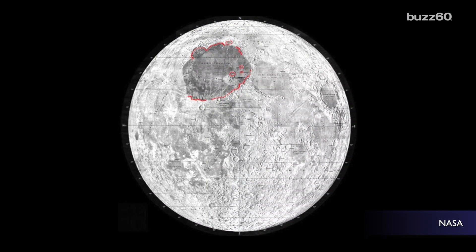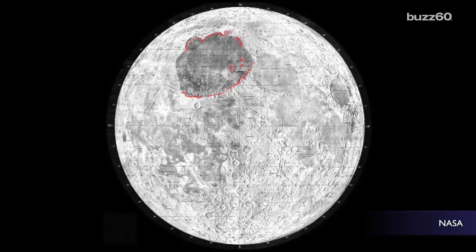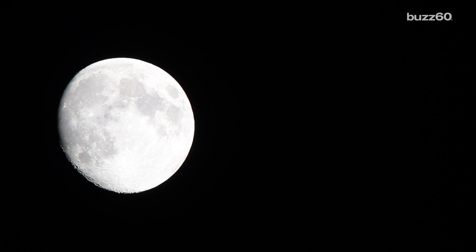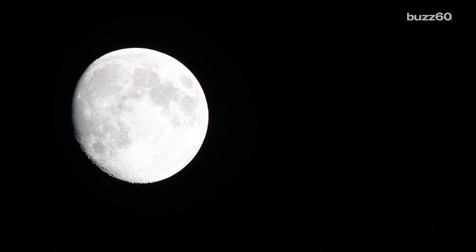One of the bigger craters we can see is called the Imbrium Basin and it's the right eye of the man on the moon. It's amazing we can see it from Earth but also kind of not. It's 750 miles across.